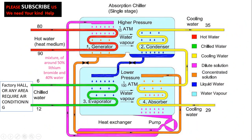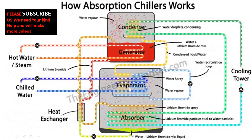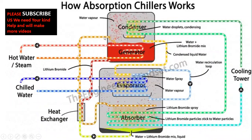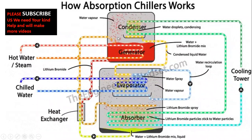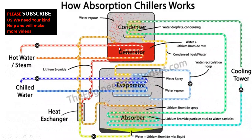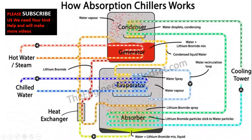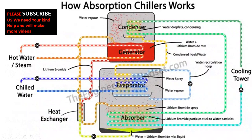All four coils are visible in the animation: the generator coil, the evaporator coil, and the absorber coil. There is a cooling tower on the roof. The lithium bromide and water solution is dropped onto the hot generator coil, the water vaporizes, and the liquid lithium bromide remains. The vapors move to the condenser and become liquid pure water again.